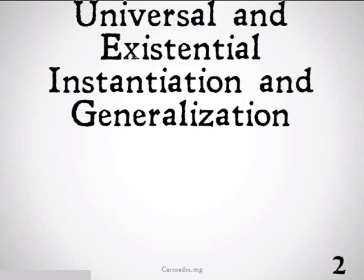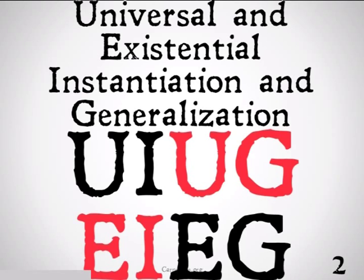In the second video, we are going to be adding four new rules to our rules of inference from propositional logic that will help us bring in our categorical propositions. These are going to be universal instantiation, universal generalization, existential instantiation, and existential generalization.